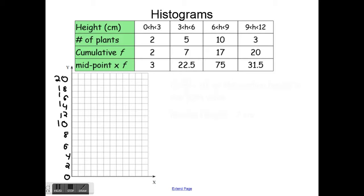At 3 centimeters we know there are 2 plants in that range. So: at 3 we plot 2, at 6 we plot 7, at 9 we plot 17, and at 12 we plot all 20. From those four points, you draw a curve through all of them starting at zero — and that is our cumulative frequency curve.